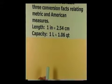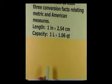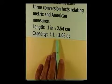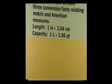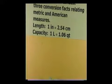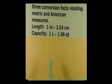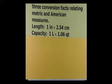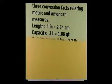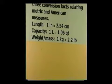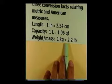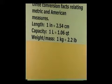For capacity, the one I suggest is that one liter is approximately 1.06 quarts — so a liter is just a little more than a quart. And for weight or mass, one kilogram is approximately 2.2 pounds.